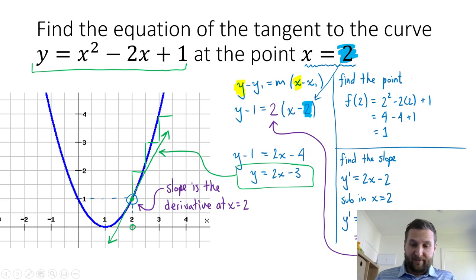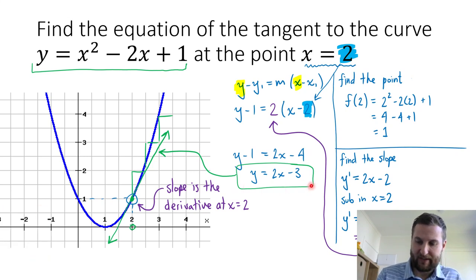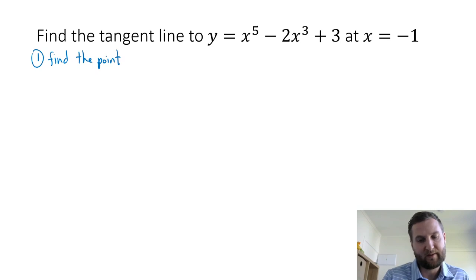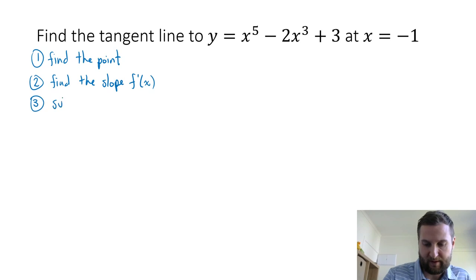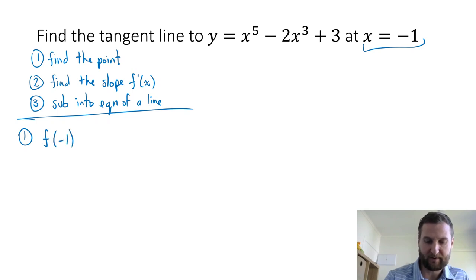There are quite a few pieces to put together to find the equation of a tangent. Let's write out some steps. First, find the point of interest — where you are going to find that tangent line. Second, find the slope of the tangent, which is f prime. Third, sub into the equation of a straight line. Let's find our point. I'm given x equals minus 1.